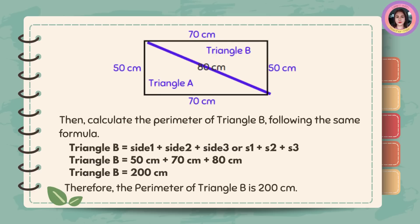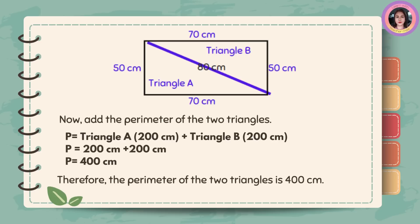Then, calculate the perimeter of triangle B following the same formula. Triangle B is equal to S1 + S2 + S3. Triangle B is equal to 50 cm + 70 cm + 80 cm. The sum is 200 centimeters. Therefore, the perimeter of triangle B is 200 centimeters. Now, add the perimeter of the two triangles. Perimeter is equal to triangle A (200 cm) plus triangle B (200 cm). So, 200 cm + 200 cm = 400 centimeters. Therefore, the perimeter of the two triangles is 400 centimeters.